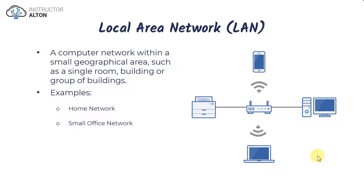Moving up in size, the most common type you're probably familiar with is the local area network, or LAN. The size of a LAN can vary — it could be a single room like a classroom or lab, or your entire home network. For example, a wireless router connecting to a desktop and a network printer via cable, with a laptop, tablet, and smartphone connecting via Wi-Fi, is a LAN.